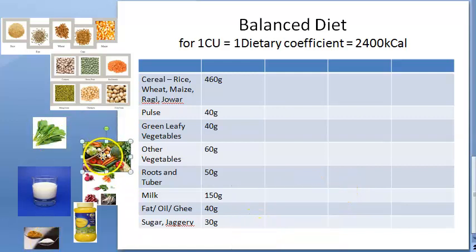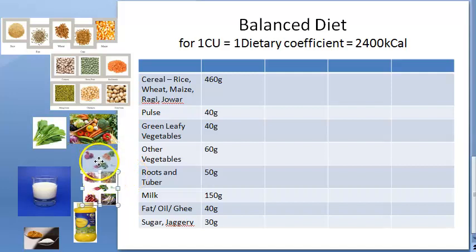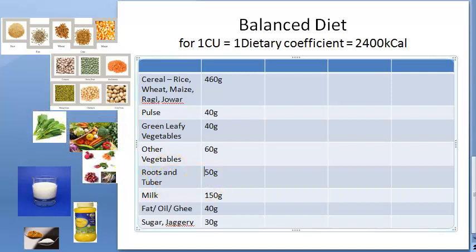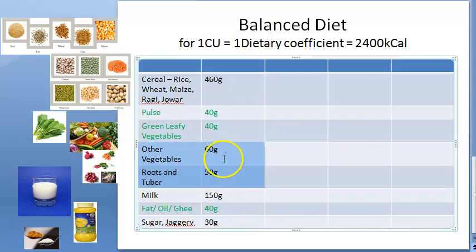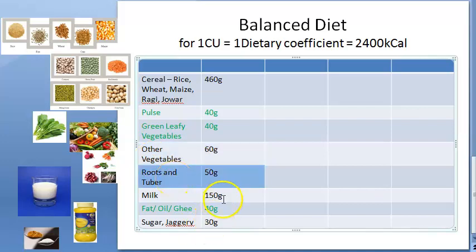Remember, almost everything is 40 grams. Sugar is a little less at 30 grams, other vegetables is more at 60 grams, roots and tubers is 50 grams, milk is 150 grams, and cereals is 460 grams — because these are the staple diet.